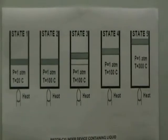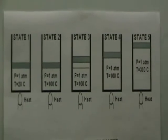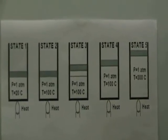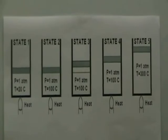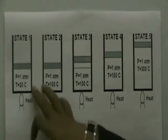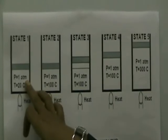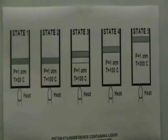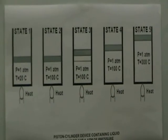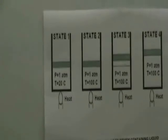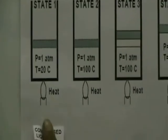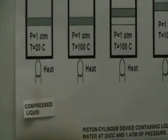In state 1, as illustrated here, water exists in the liquid phase and it is referred to as a compressed liquid or a sub-cooled liquid, meaning that it is about to vaporize. The pressure in the cylinder is maintained at 1 atm, and the heating depends on atmospheric pressure and weight of the piston, both of which are constant. I am going to label this as my compressed liquid phase.